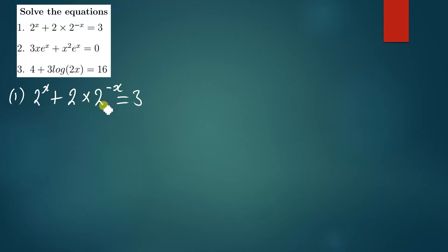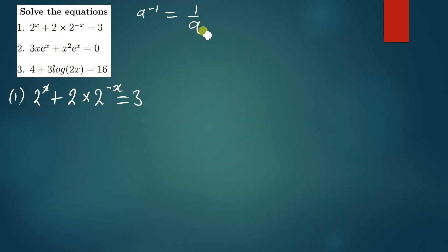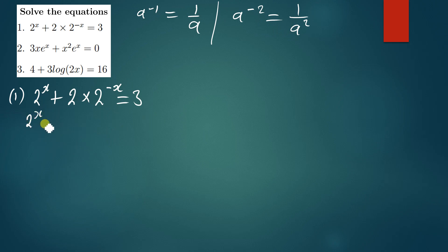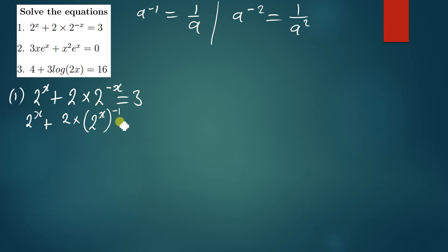What I'm going to apply here are the rules of indices, and then for finding the answer we'll need some applications of logarithms. According to indices, if anything is raised to the power negative 1, it's just the same as 1 over a. For instance, a to the power negative 2 is just the same as 1 over a squared. So we write 2 to the power x, plus 2 times 2 to the power x in brackets to the power negative 1, such that if you multiply x and negative 1 you get negative x. This equals 3.